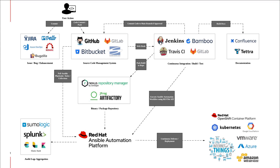Hi everyone. We will be looking at how Red Hat Ansible Tower can be integrated with Jenkins in a CICD process. But before that, let's look at a generic CICD flow as shown in the diagram.